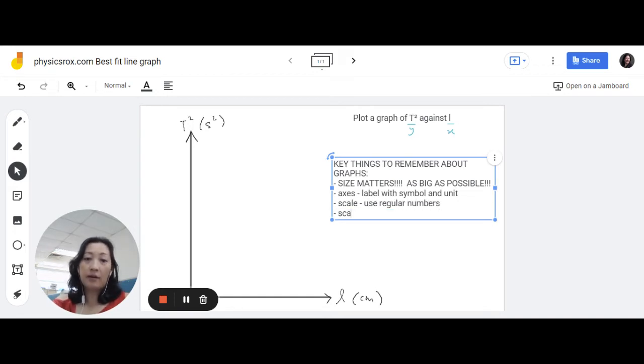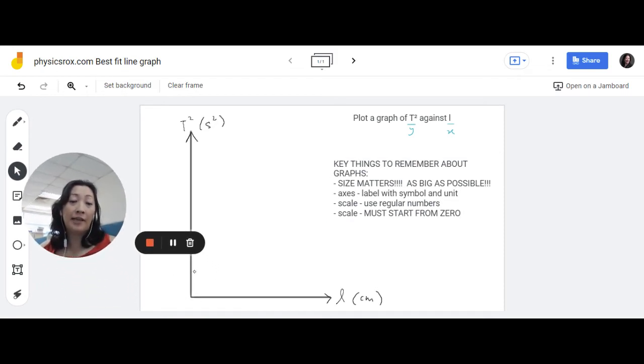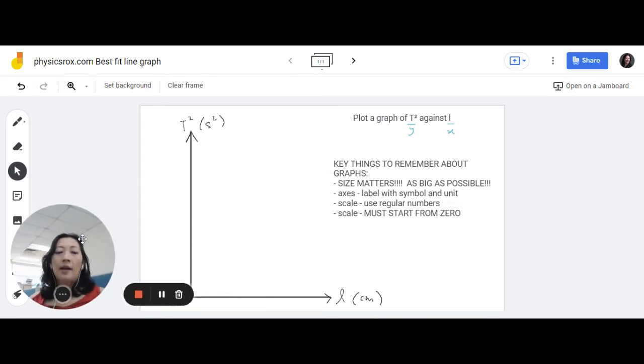And while we're on the topic of scale, when you label the numbers on the axes, for SPM, you must start from zero. Now, other subjects like maths, or even if you look at physics IGCSE, it is possible to have the scale that does not start from zero. It's possible, but not for SPM. For SPM, you must start from zero. And there's a reason for this. It's everything to do with how we want to determine the relationship of the graph.